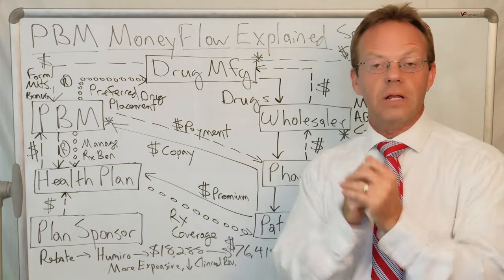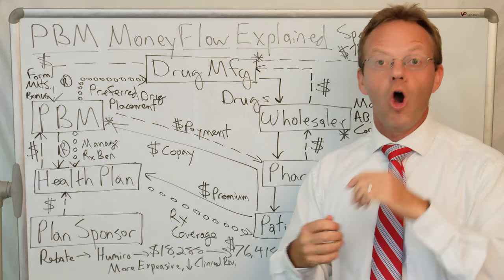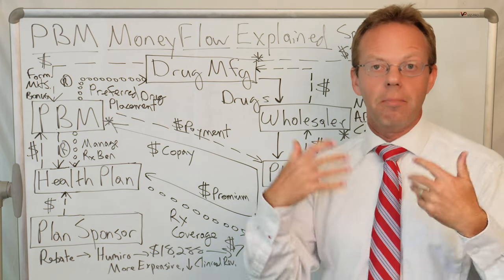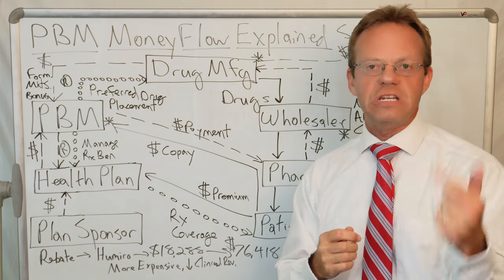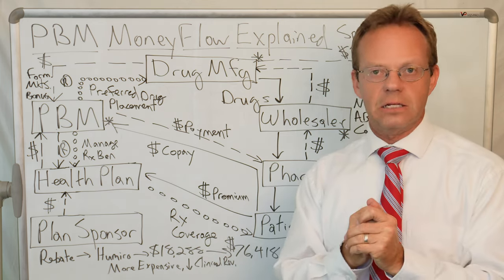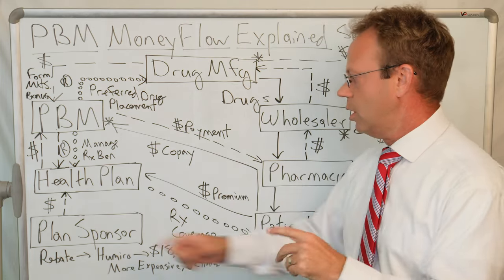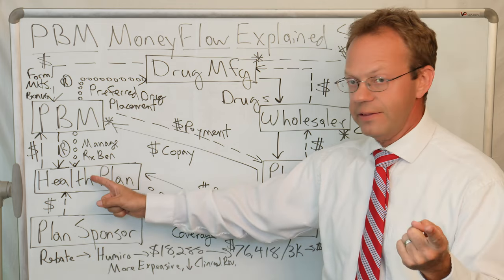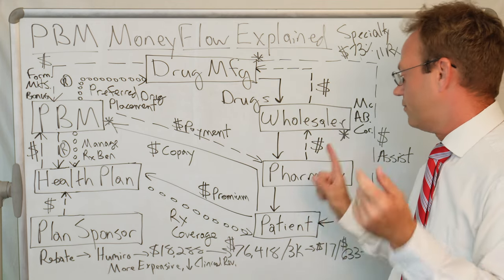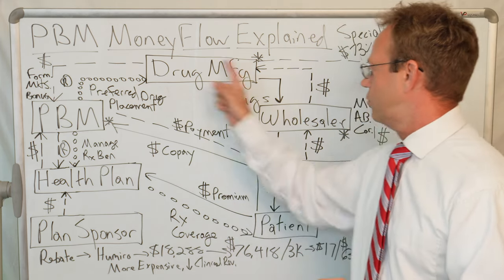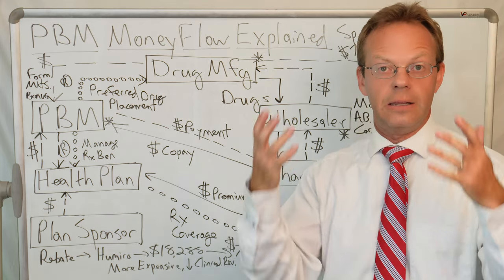I would argue that if you work in employee benefits, you need to understand this flow chart and be able to reproduce it on a napkin. So by the end of this video, my goal is for you to be able to reproduce this on a napkin so that you can explain it to somebody who's not in benefits in plain English. Here are the players on the field when it comes to the PBM Money Flow: the plan sponsor, the plan itself, the PBM, the drug manufacturer, the wholesaler, the pharmacy, and the patient — seven players.